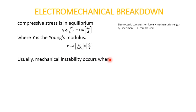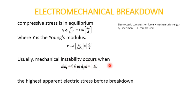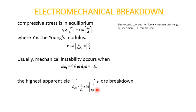Mechanical instability occurs at d/d₀ = 0.6, i.e., d₀/d = 1.67. Substituting these values into the equation, the highest apparent electric stress before breakdown is: E_max = V/d₀ = 0.6 · (Y/ε₀ε)^(1/2). This equation is approximate, based on Young's modulus and mechanical stress. When material is subjected to high stress, the simple theory of elasticity does not hold.